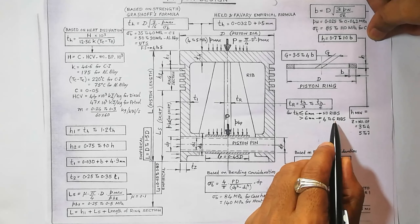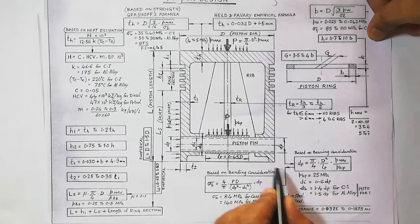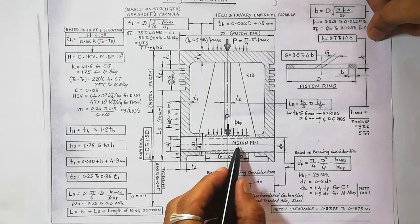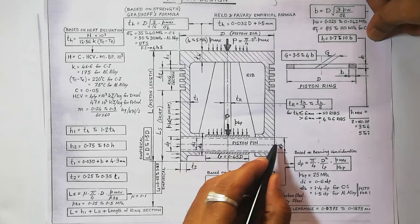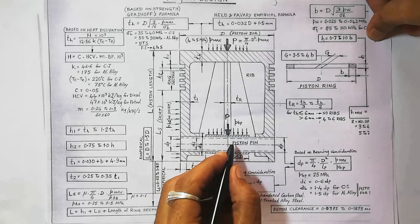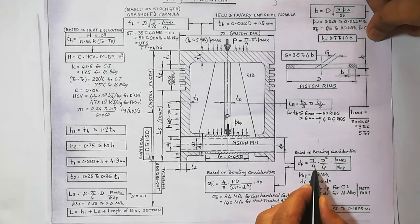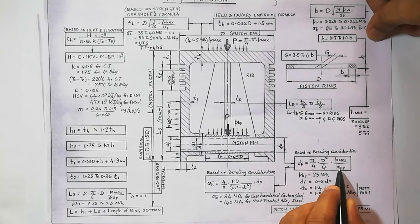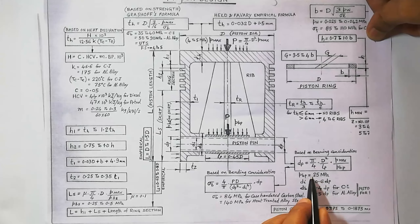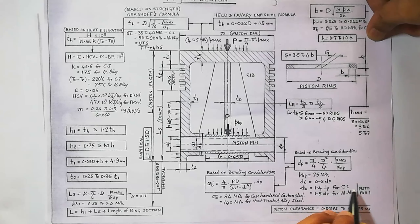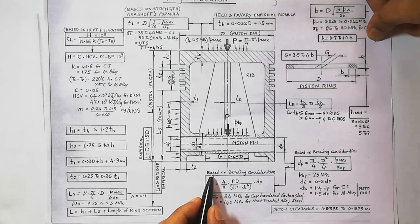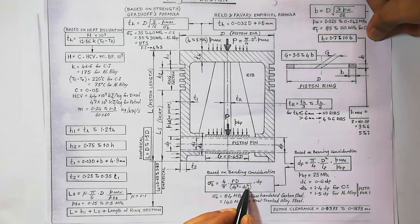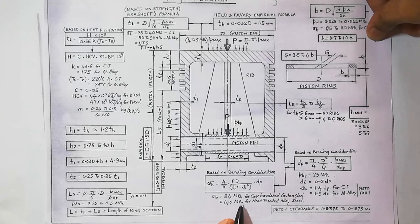There are 4 to 6 ribs used. Based on bearing consideration, dp (piston pin diameter) is calculated as: (pi/4) times D squared times P_max divided by (lp times p_bp), where p_bp equals 25 MPa. The inner diameter di equals 0.6 dp. The boss diameter db equals 1.4 dp for cast iron and 1.5 dp for aluminum alloy. For bending, sigma_b = (4/pi) times p_d times (dp^4 minus di^4) divided by dp, where the maximum bending stress is 84 MPa for carbon steel and 140 MPa for alloy steel.